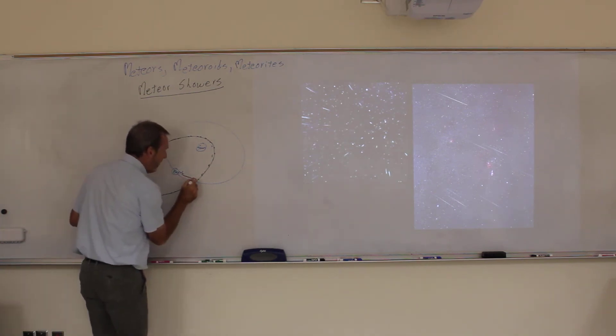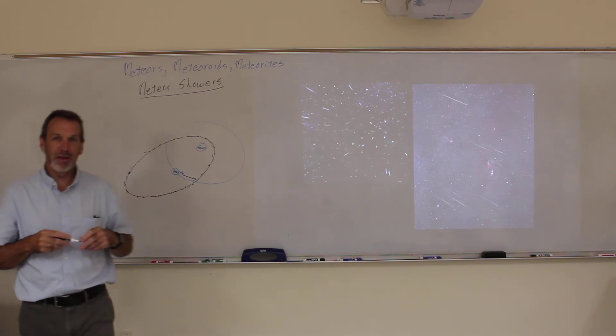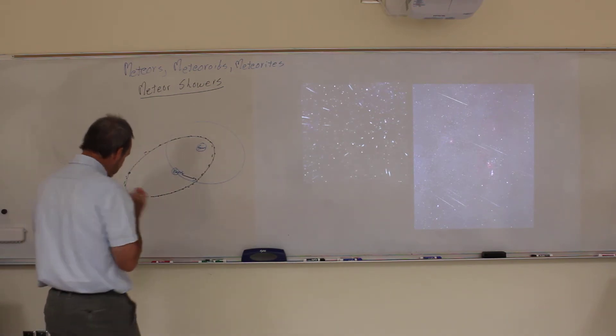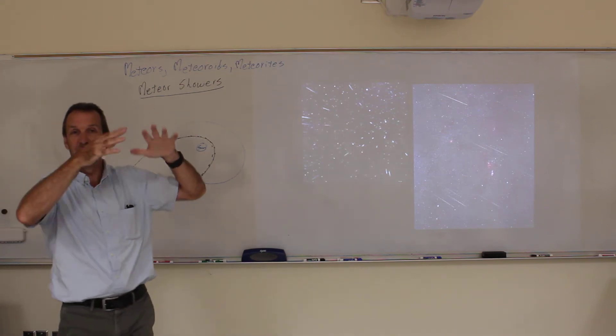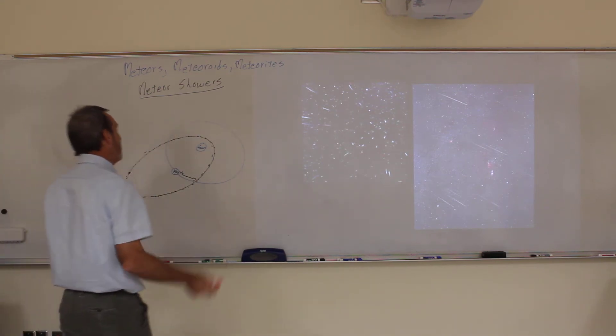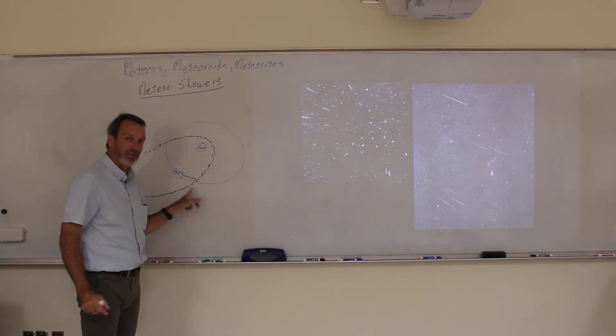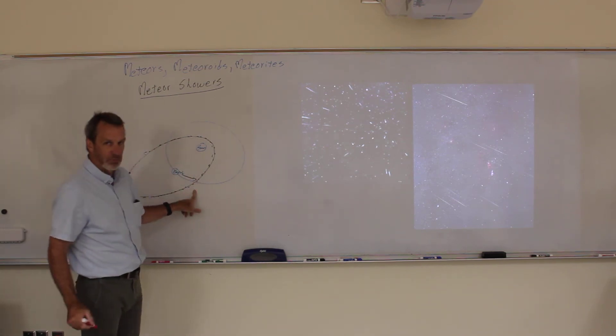Because every time it goes around it melts, this material comes off, but it still keeps orbiting the sun. So all those little particles are still orbiting the sun. And then every time the earth runs into that location in its orbit, all of a sudden there's going to be a whole bunch of pieces of sand, and boom, you're going to get meteor showers all over. Meteors coming in all different directions. And that's how you get a meteor shower.